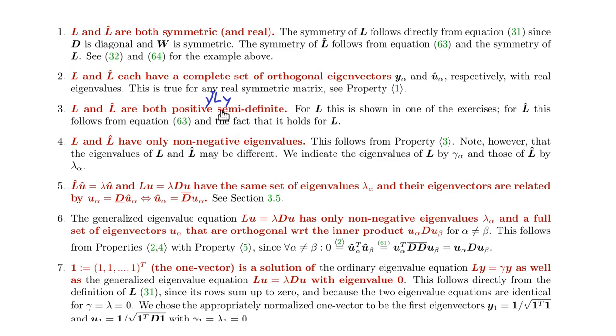And positive semi-definite means that for any vector this is non-negative. This in turn implies that the eigenvalues are all non-negative. That's sort of a different way of defining this or is a way to define semi-definite.